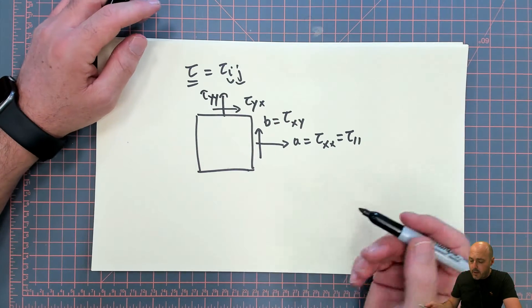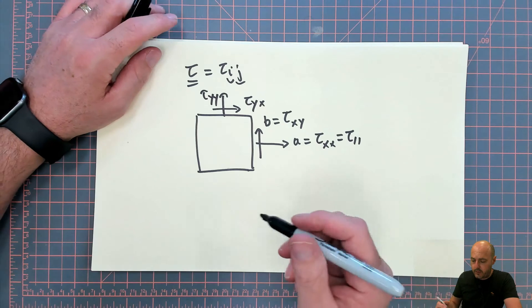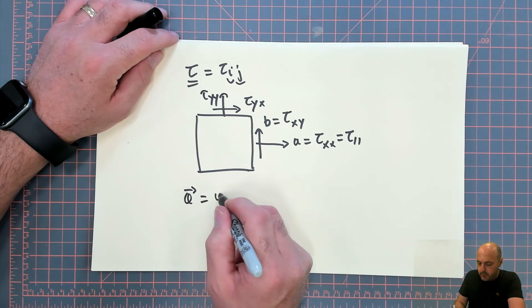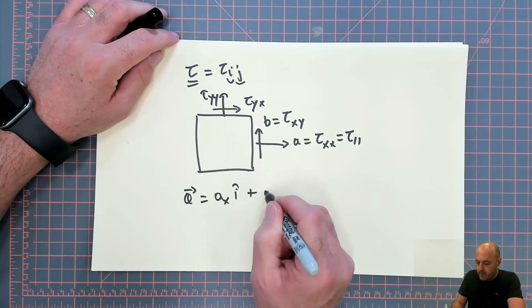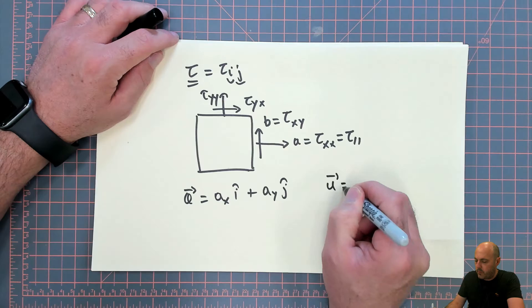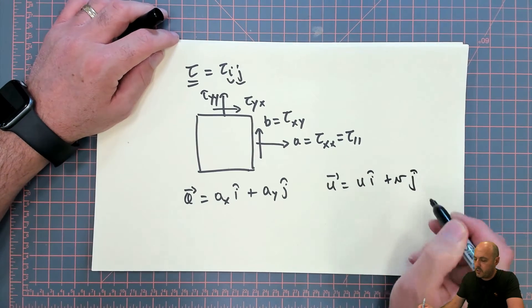Now, just like vectors are written as, when you write the vector a, for example, you have a_x i plus a_y j, or the vector u, you write it as u i plus v j.